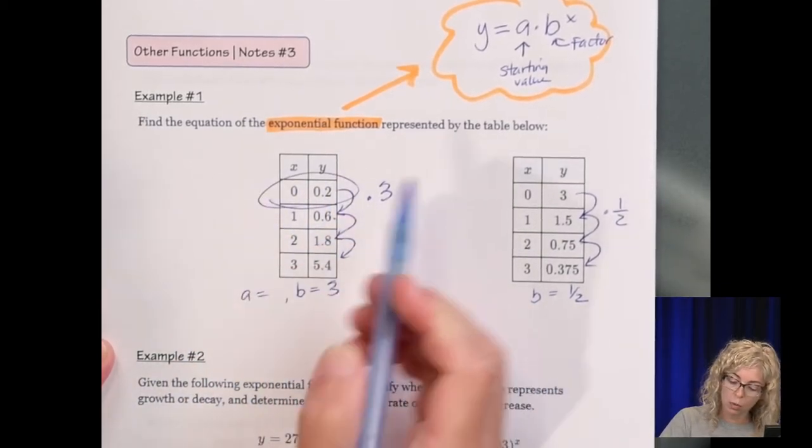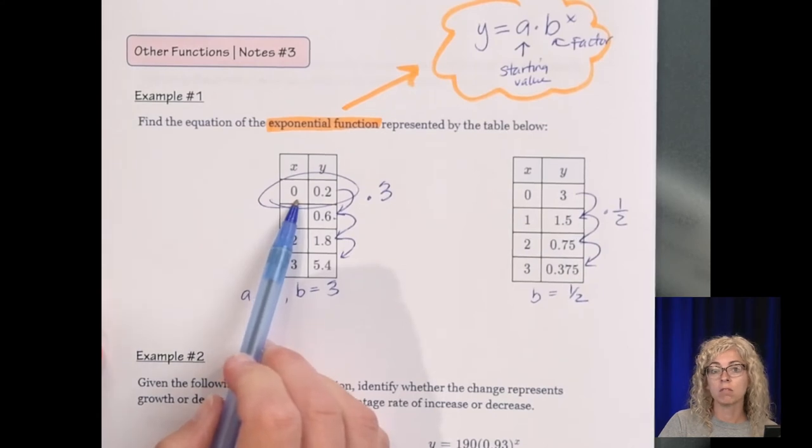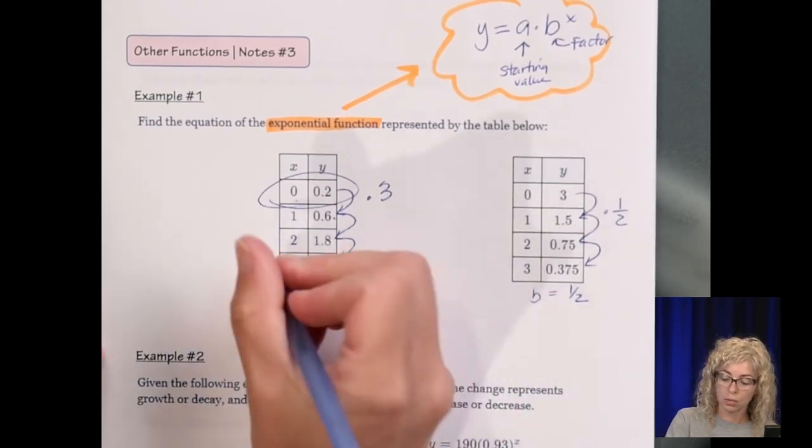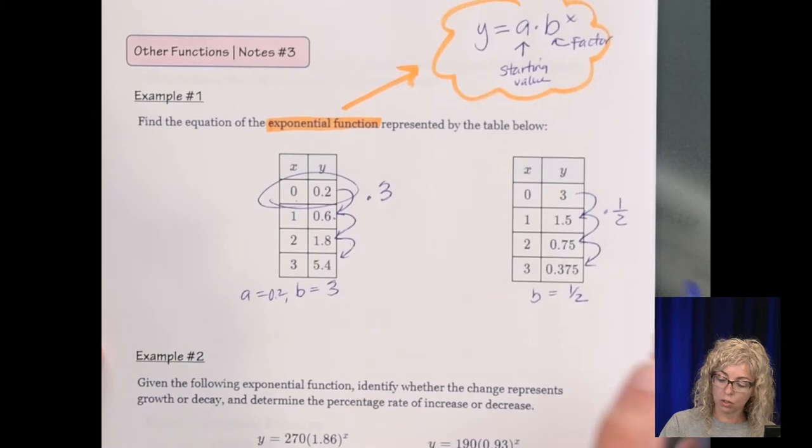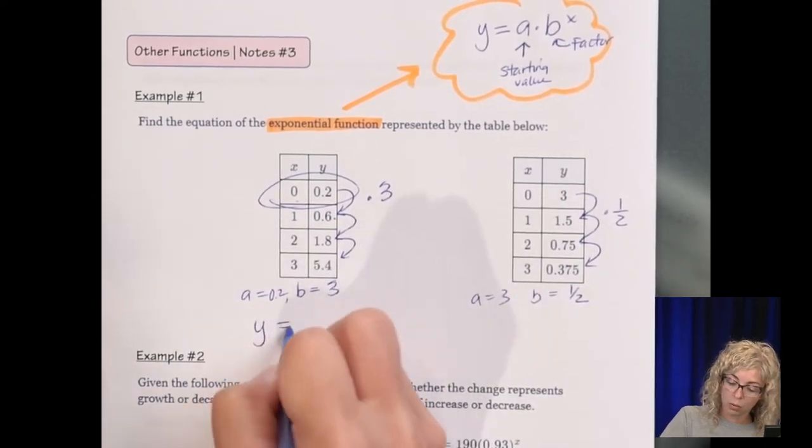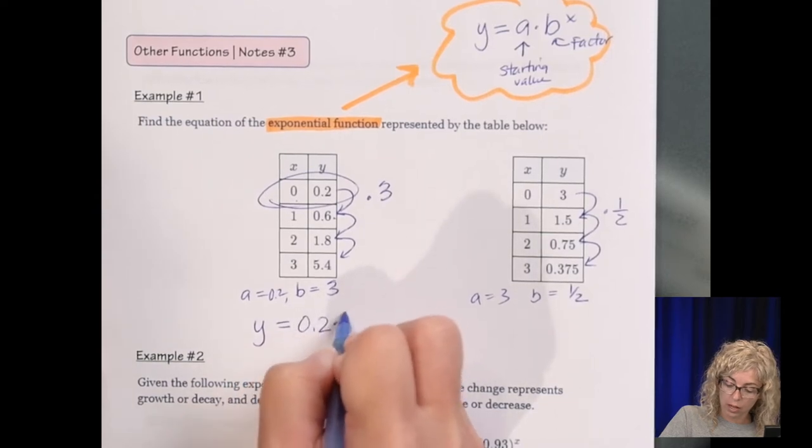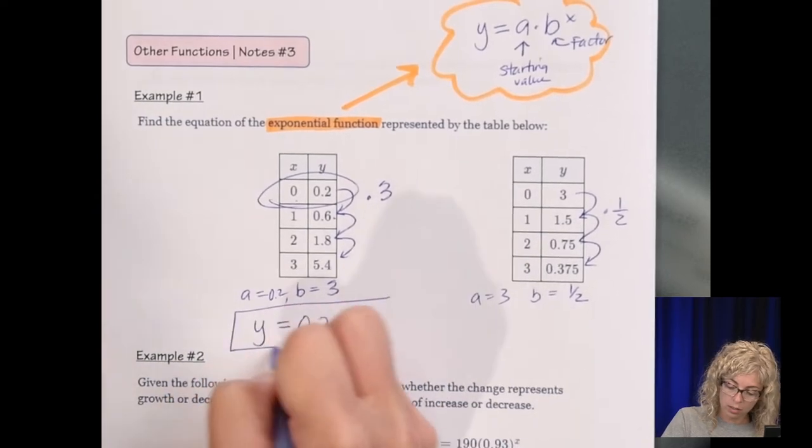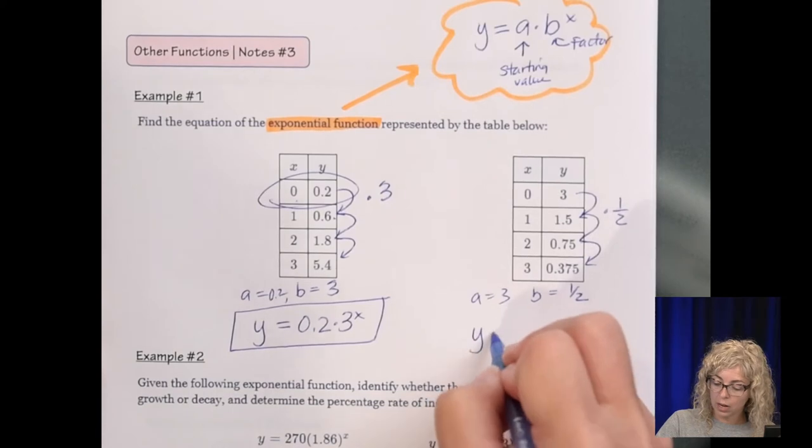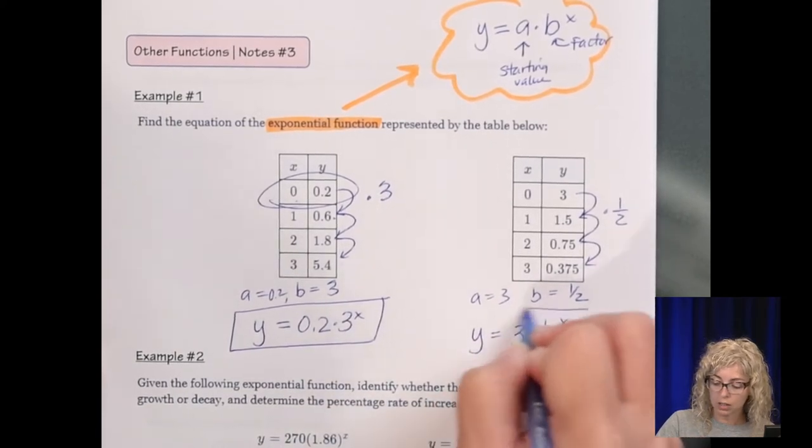And then our A value is what we start with. So our A value here, you want to look for an X value of 0. It's also a Y intercept. So it's 0.2. And here our A value is 3. So this is going to be Y equals 0.2 times 3 to the X. And this is going to be Y equals 3 times 1 half to the X.